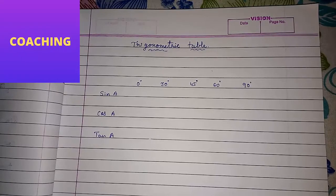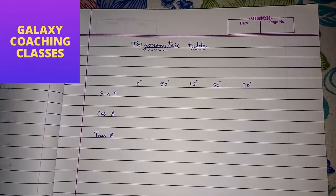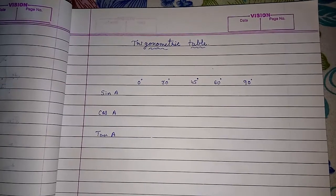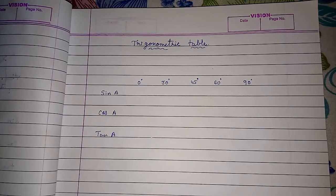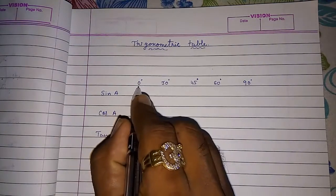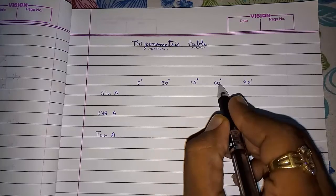Hello friends, today I am going to tell you a trick — a short method by which you can easily remember the trigonometric angle ratios. First I am going to explain method one, then method two as well. We have the angles 0, 30, 45, 60, and 90 degrees.